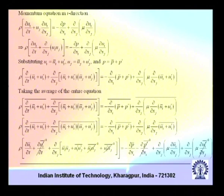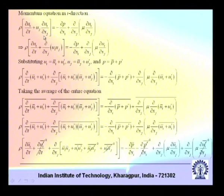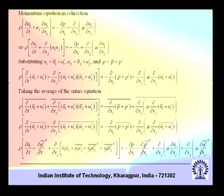Now let us consider the momentum equation in the i-th direction. We write the momentum equation and make a slight manipulation: we add u_i times del u_j / del x_j to the convective term u_j del u_i / del x_j, so the combined terms can be written as del/del x_j of (u_i u_j). This addition is valid because del u_j / del x_j = 0 by the continuity equation. This converts the equation to conservative form.